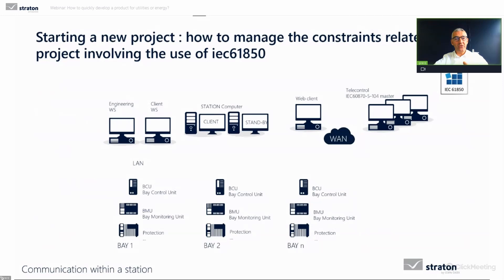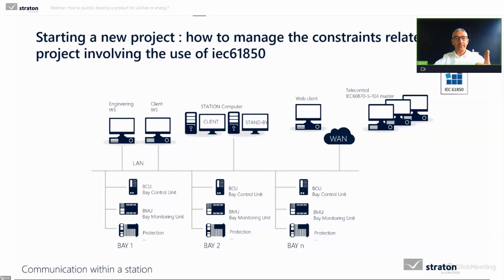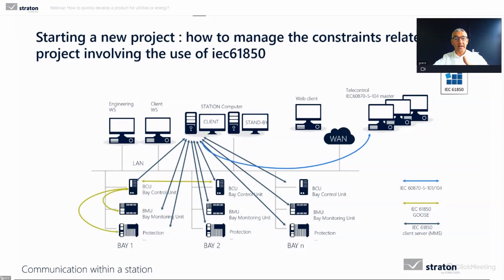Let's look at a typical topology of equipment in an electrical substation. You have controllers and stations — different kinds: BCU and protection, bay controlling units or bay monitoring units. These are connected through an Ethernet network. Controllers communicate with each other using the GOOSE protocol. Communication on IEC 61850 client-server is through MMS.